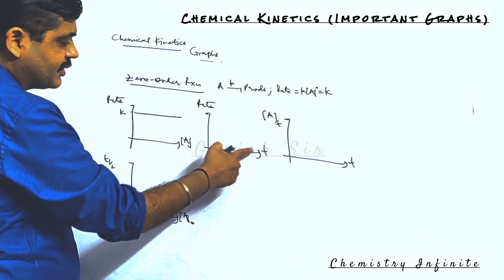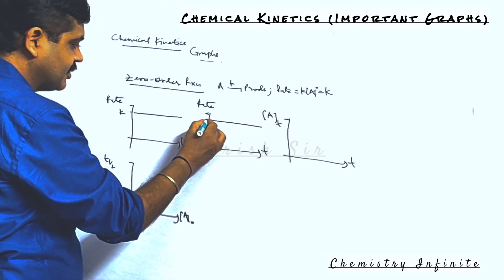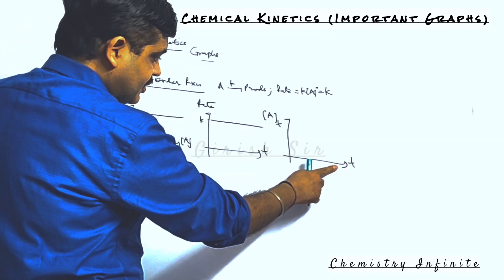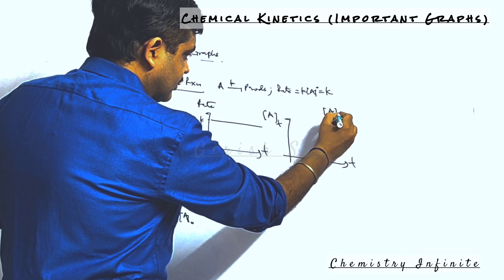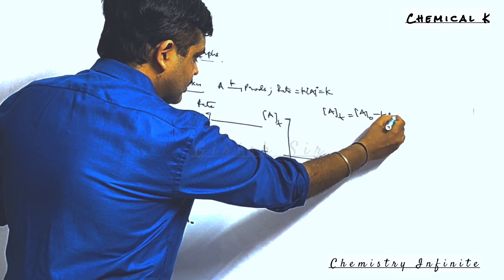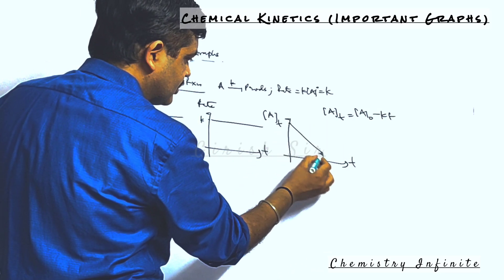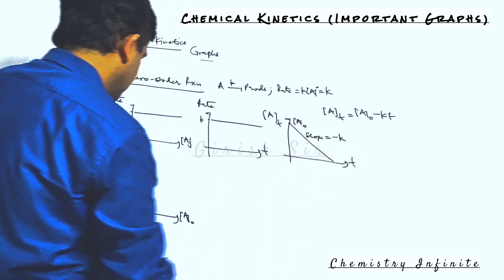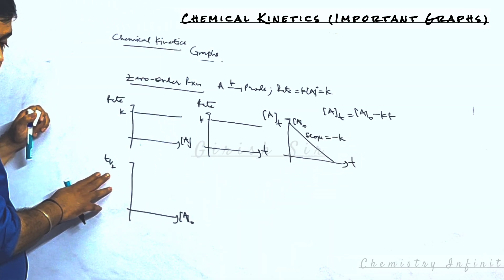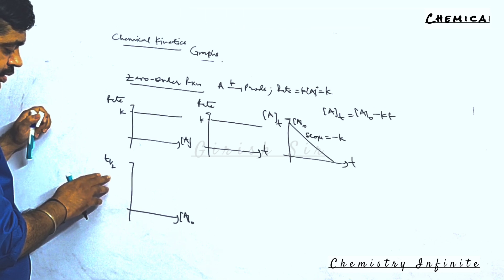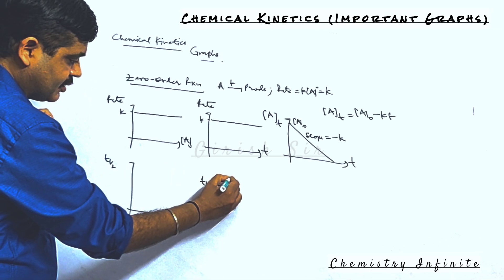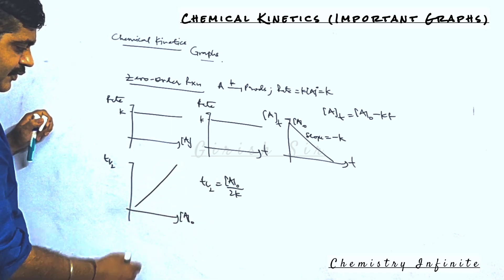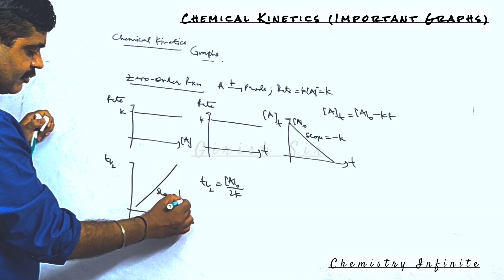Next graph, rate versus time: rate doesn't change with time for a zero-order reaction, and the constant value is k. Next, concentration of reactant versus time: concentration decreases linearly in a zero-order reaction, with slope equal to negative k. Next, the half-life of a zero-order reaction is directly dependent on initial concentration, with a graph having slope 1 divided by 2k.